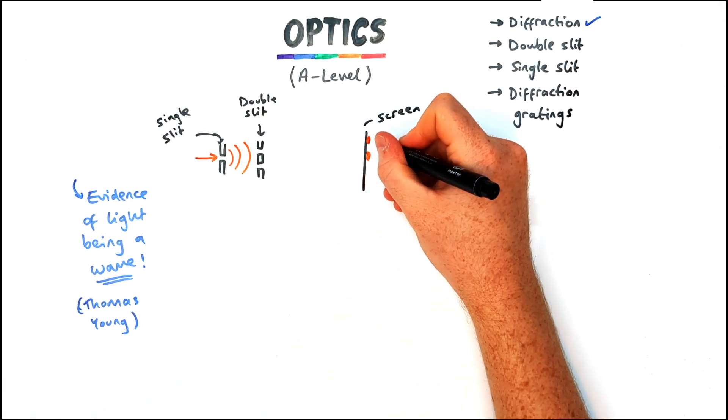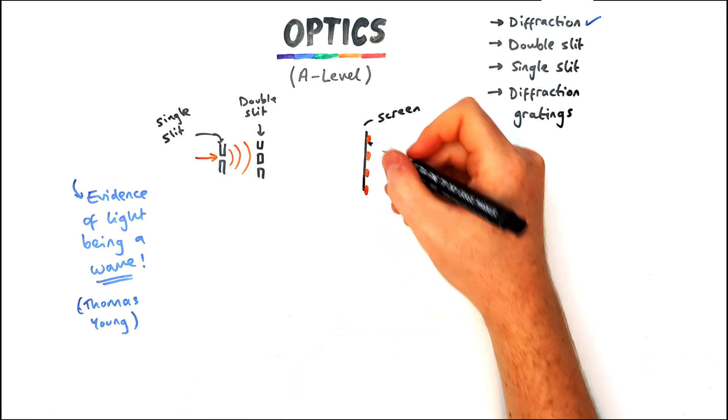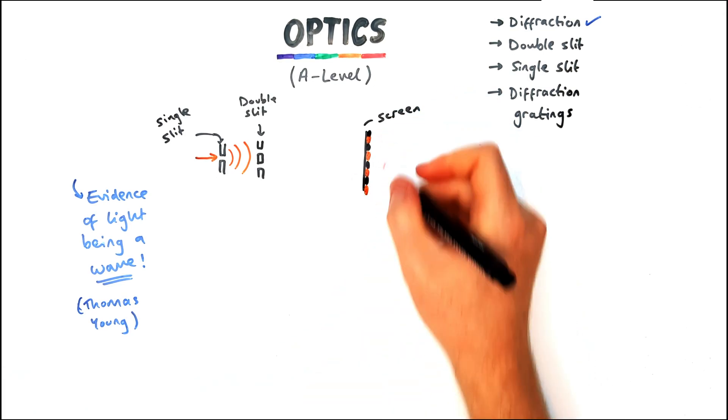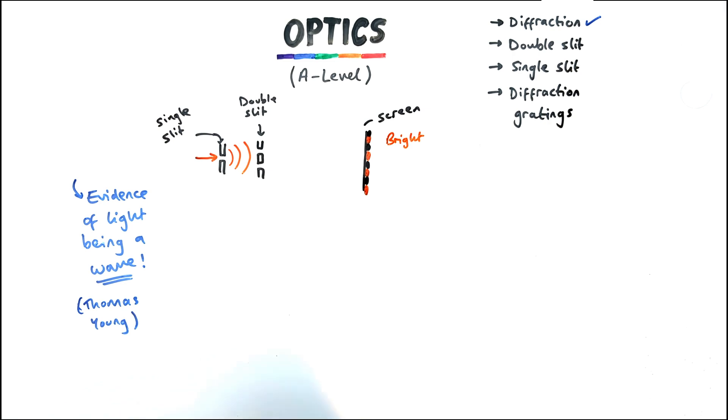Now the pattern we get are these even dark and bright fringes or dark and bright spots that are even in width, even in intensity and we need to be able to explain them.